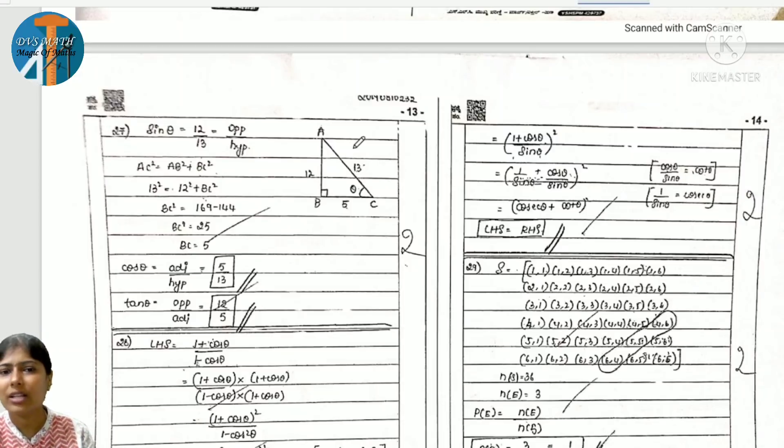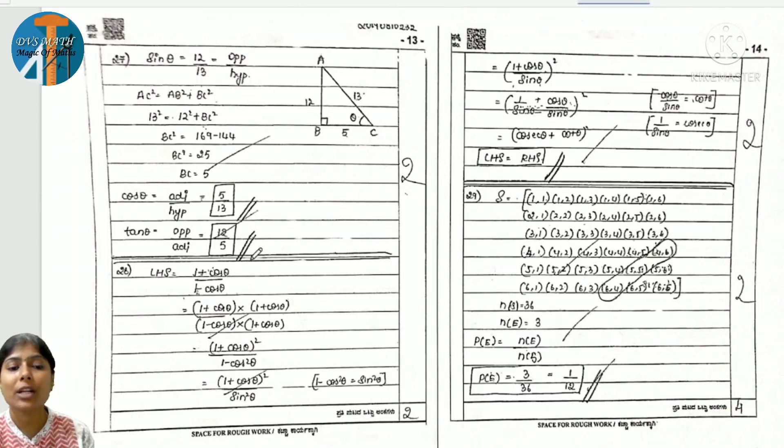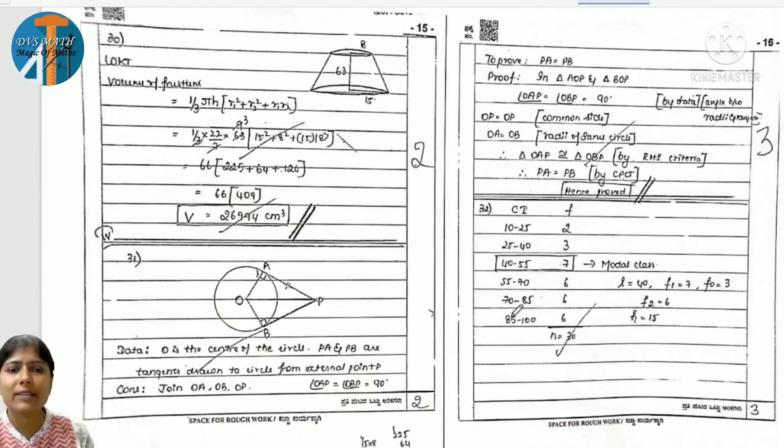For each question, make neat tables and boxes. Complete proofs with final answers boxed. Avoid mistakes and recheck your answers. For quadratic equations, you'll get two answers - box both answers. For trigonometry proofs, write step-by-step reasons. Instead of writing cos squared, write the reason why you're using that identity.